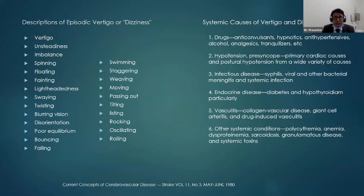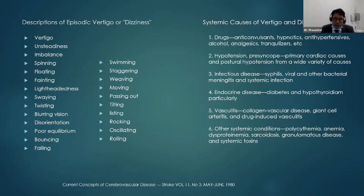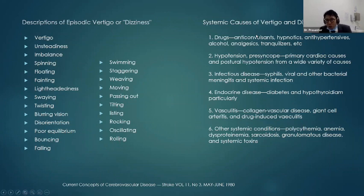These are the systemic causes. People will describe vertigo as unsteadiness, imbalance, spinning, floating, or fading. Regarding systemic causes and medication, when the patient comes to see you, you have to think about their medication history, and also blood pressure, hypotension, and arrhythmia.